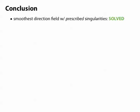And just a few concluding remarks. So, we set out to solve this problem of, given a set of singularities on a surface, find the smoothest vector field that has only those singularities. And this problem is really solved now. We have a nice simple algorithm with guarantees that takes just a single linear solve.